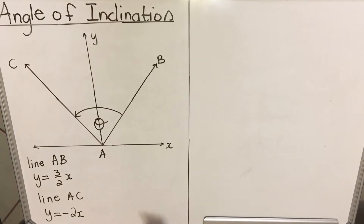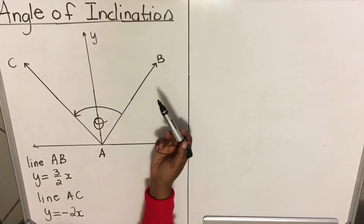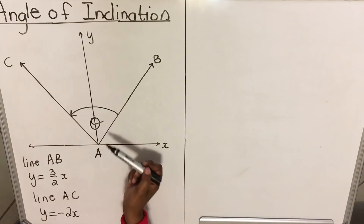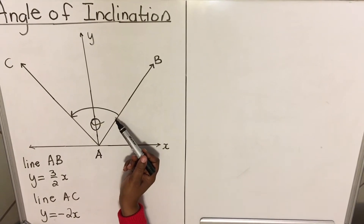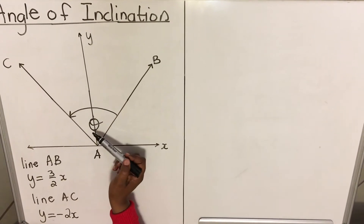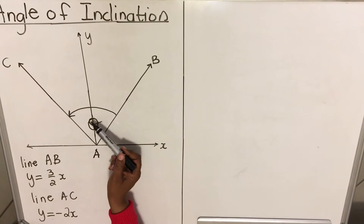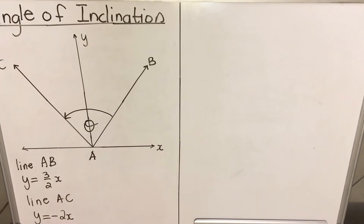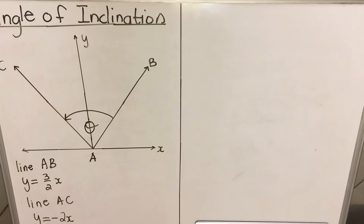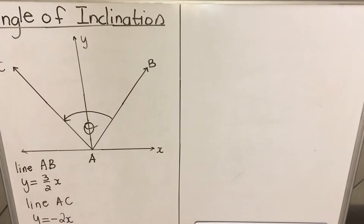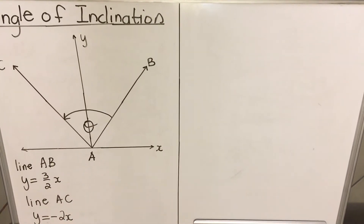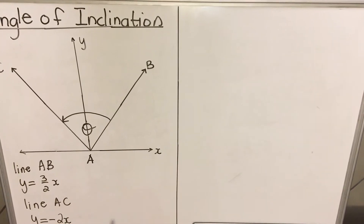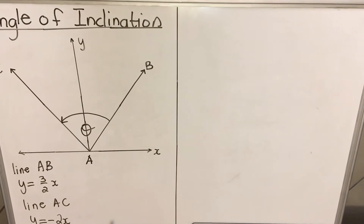In this example, you have two lines: line AB and line BC. We are asked to find the angle between the two lines, and they use theta for that angle. What we know is that the angle of inclination — the angle from the x-axis to the line — equals the arctangent of the gradient of the equation.